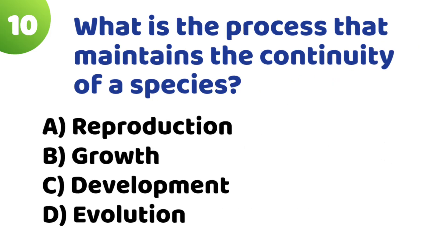Question 10: What is the process that maintains the continuity of species? Option A: Reproduction. Option B: Growth. Option C: Development. Option D: Evolution. The correct answer is Option A — Reproduction.